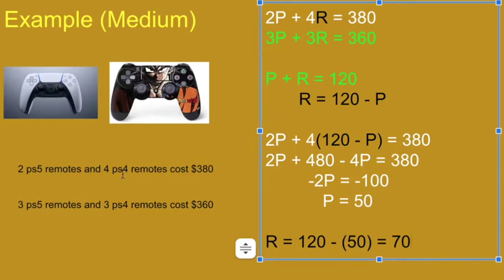Now that I know P is 50, R must be 70. Interesting, because if we look at the controllers, that means that the person that wrote this problem made the PS5 controller cheaper than the PS4 controller.